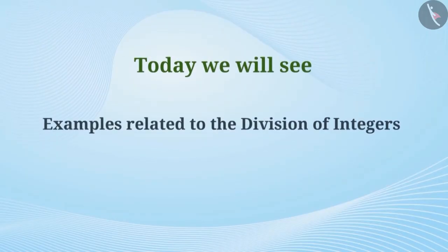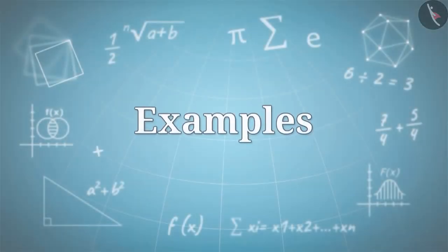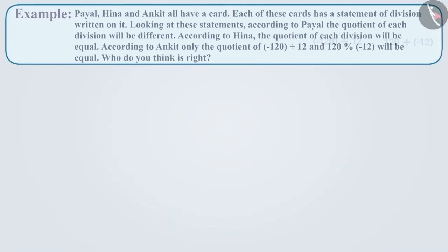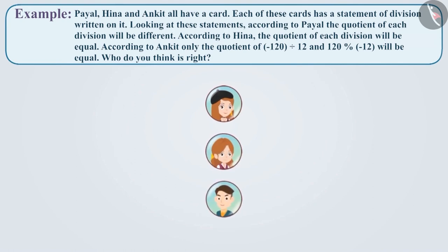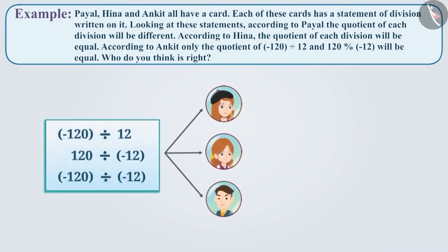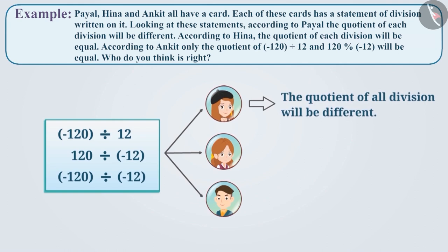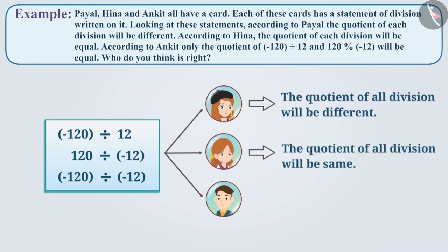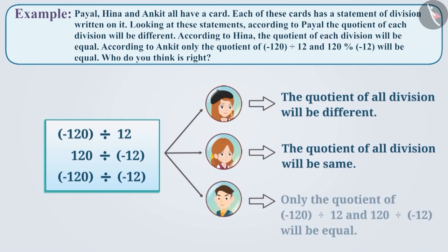Today we will see examples related to the division of integers. Payal, Hina, and Ankit all have a card. Each of these cards has a statement of division written on it. Looking at these statements, Payal thinks that the quotient of all divisions will be different, Hina thinks that the quotient of all divisions will be the same, and according to Ankit, the quotient of only minus 120 divided by 12 and 120 divided by minus 12 will be equal. Who do you think is right?